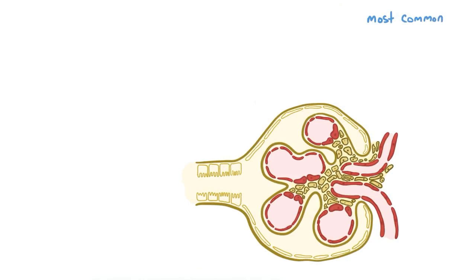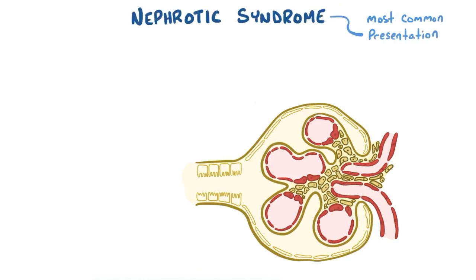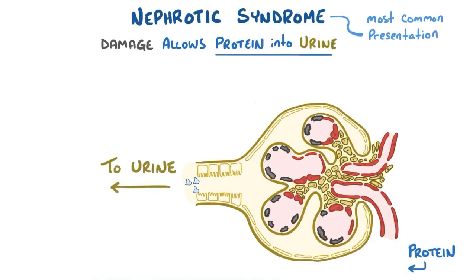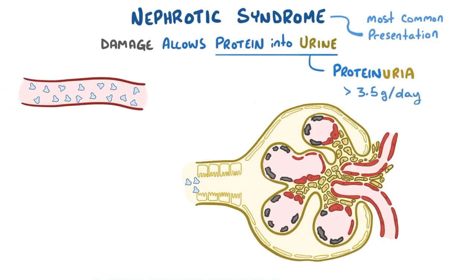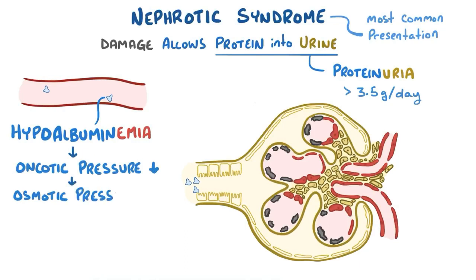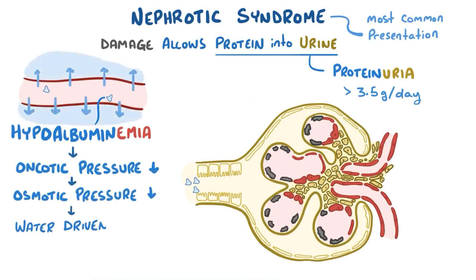In the majority of cases, lupus nephritis presents as a nephrotic syndrome, which means that the damage to the nephron allows plasma proteins to get into the urine, causing proteinuria, typically greater than 3.5 grams per day. An important protein in the blood is albumin, and so when it starts leaving the blood, people get hypoalbuminemia — low albumin in the blood. With less protein in the blood, the oncotic pressure falls, which lowers the overall osmotic pressure, driving water out of the blood vessels and into the tissues, called edema.